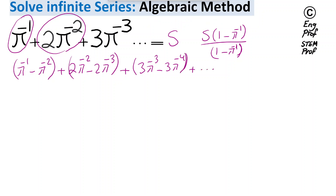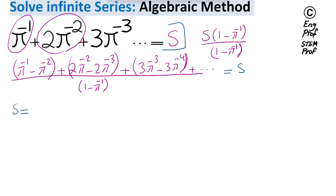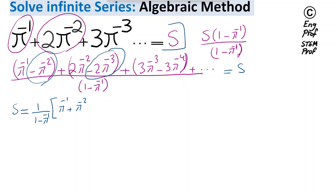So what do we get out of this? In the denominator we have 1 minus π to the power minus 1. We can simplify: the sum equals 1 over (1 minus π to the power minus 1) times the numerator. We have minus π to the power minus 2 plus 2 times π to the power minus 2, giving π to the minus 1 plus π to the minus 2. Similarly, negative π to the minus 3 plus 3π to the minus 3 gives π to the minus 3, and this trend continues forever.